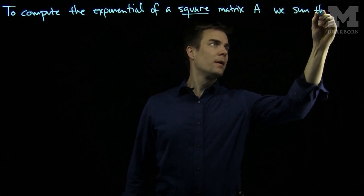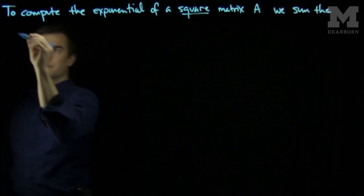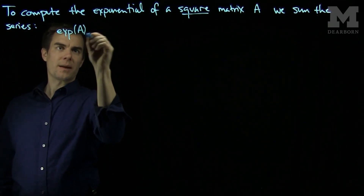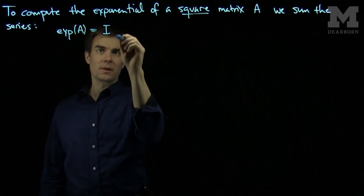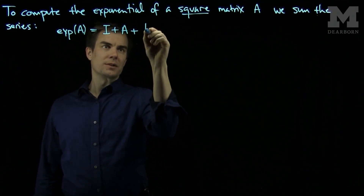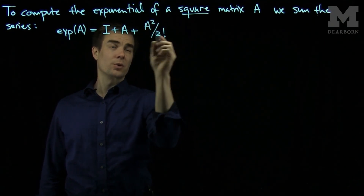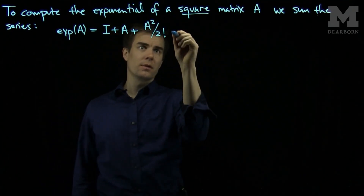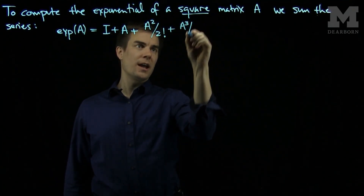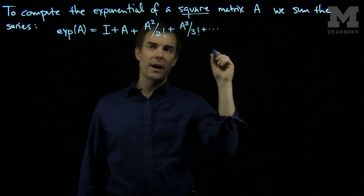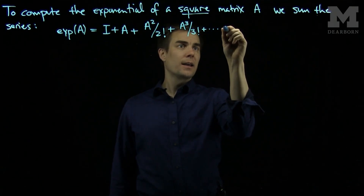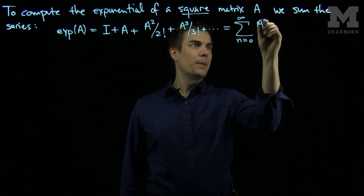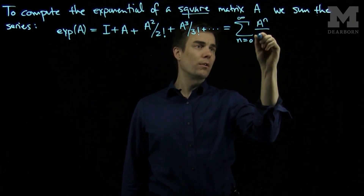We sum the series. The exponential of a matrix A is the identity matrix first, plus the matrix A itself, plus A squared over 2 factorial. I square the matrix A and divide every entry in the matrix by 2 factorial. Then I cube the matrix A, divide by 3 factorial, and I do this pattern forever and add all these matrices up. We can compactify this and write it as one sum: the sum n goes from 0 to infinity of the matrix A to the power n over n factorial.